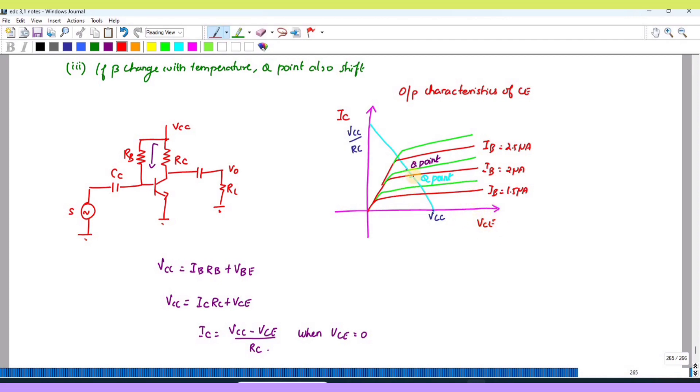IC is your output current and VCE is your output voltage. In order to operate this as an amplifier, the Q-point must be in the active region. This red line indicates IB is equal to 2 microamps, and this is normal operation. If the temperature changes, the beta will change.